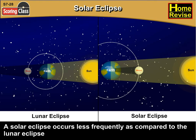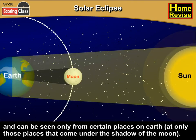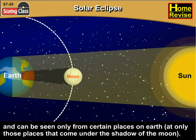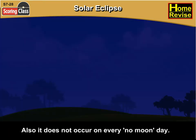A solar eclipse occurs less frequently as compared to the lunar eclipse and can be seen only from certain places on earth — that is, at only those places that come under the shadow of the moon. Also, it does not occur on every no-moon day.